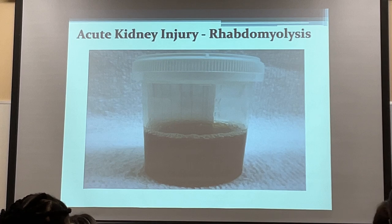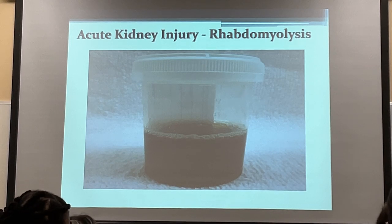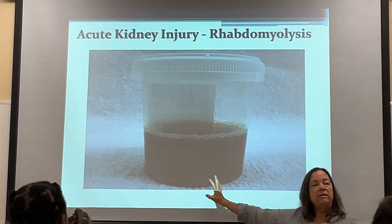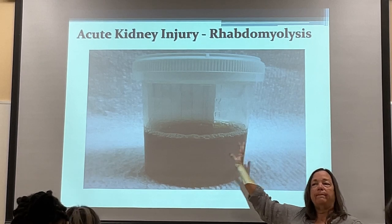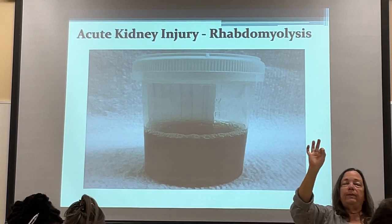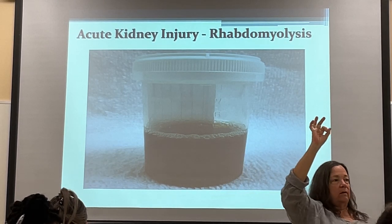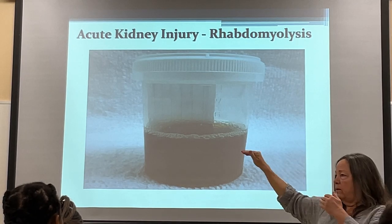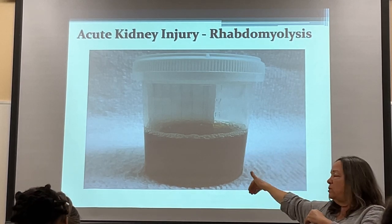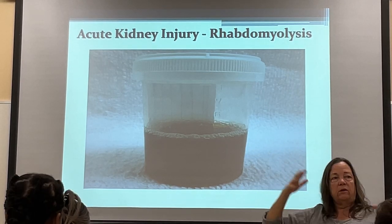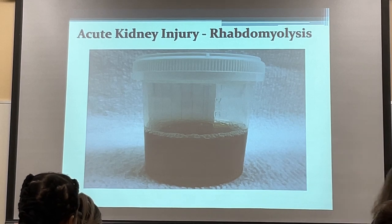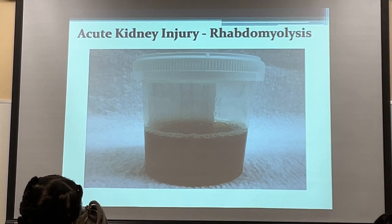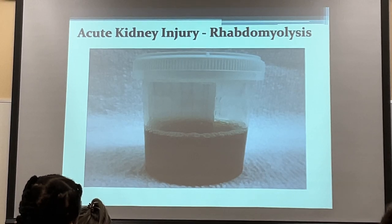Rhabdomyolysis: this is breakdown of muscle cells into myoglobin — very large molecules that will spill into the urine when the kidneys shut down, the same as protein. What causes muscle cell breakdown? Overexertion.